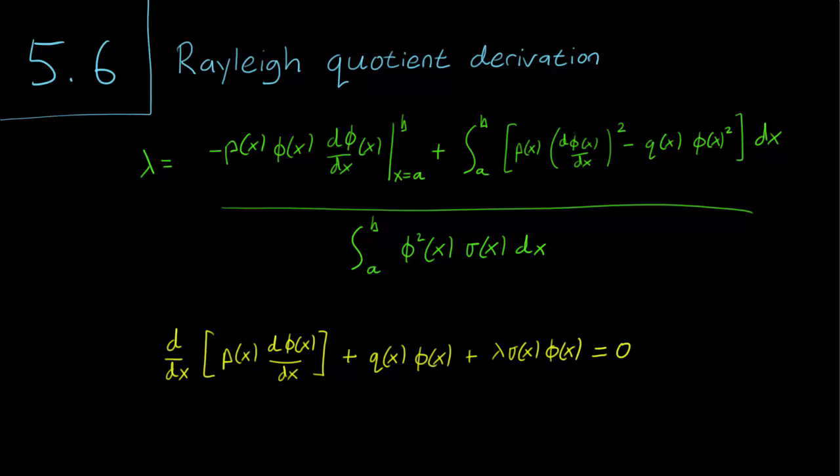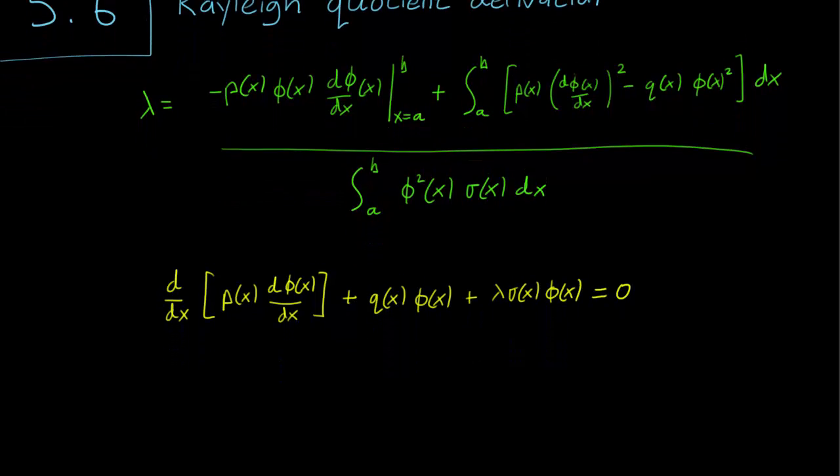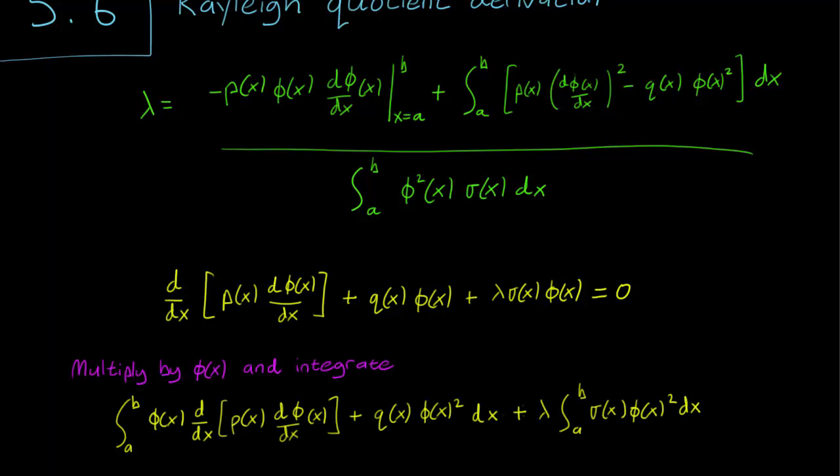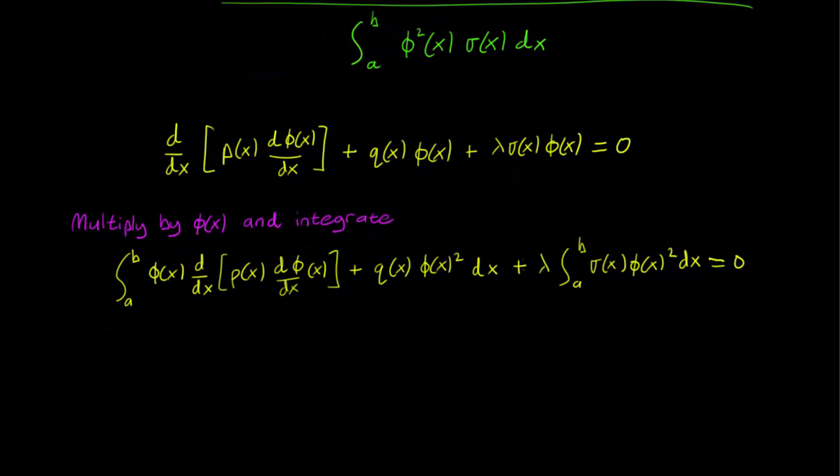What we do is first multiply by phi(x) and integrate. We impose boundary conditions from a to b. We can pull lambda out of the integral because lambda does not depend on x, unlike every other term in the Sturm-Liouville equation. This equals zero, which allows us to solve for lambda.